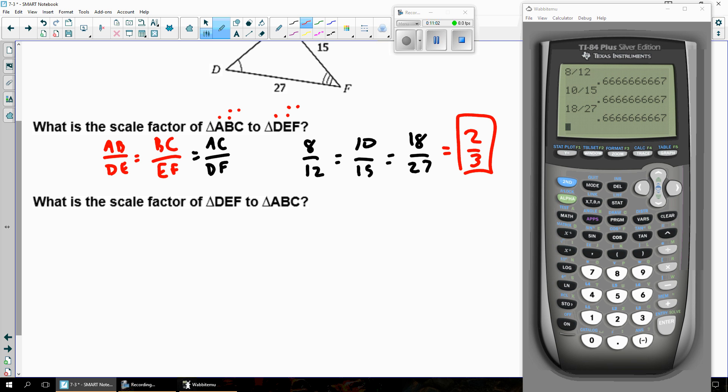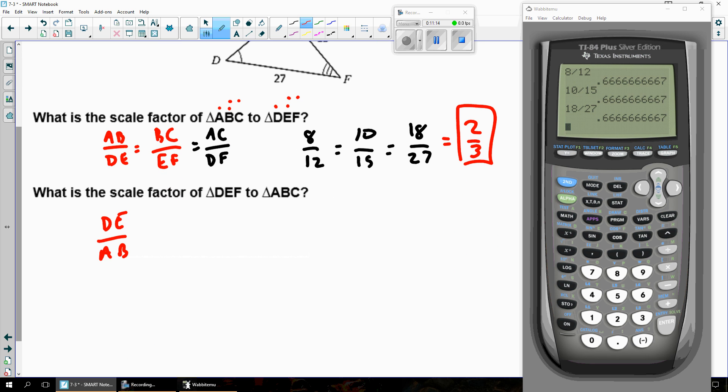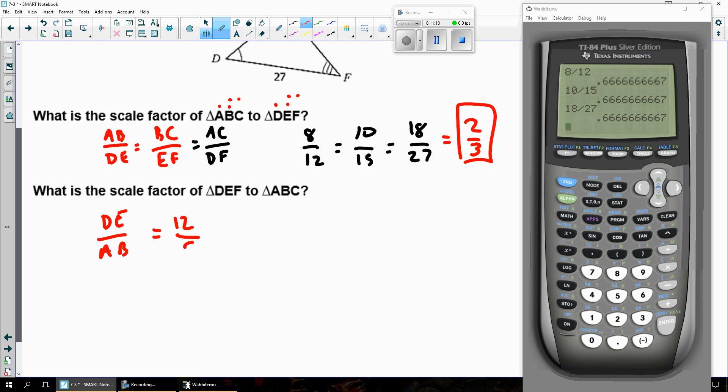So now I say the scale factor of DEF to ABC. So this is looking at it the other way. I'll put DE on top and AB on bottom. So DE is 12. That's what goes on top. And AB or 8 goes on the bottom. And that reduces down to three-halves. The scale factor is just flipped over.